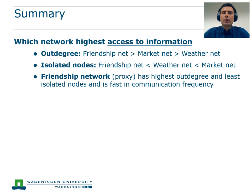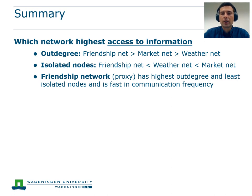To summarize and answer the research questions: with regards to farmers' access to information, based on the out-degree and number of isolated nodes, we can conclude that the friendship network has the most suitable properties, as mung bean farmers seem to have very tightly woven friendship interactions and exchange information on a daily basis. We therefore propose to use the favorable characteristics of the friendship network as a proxy to also disseminate weather and market information, and to reach farmers more disconnected from information and communication technologies.